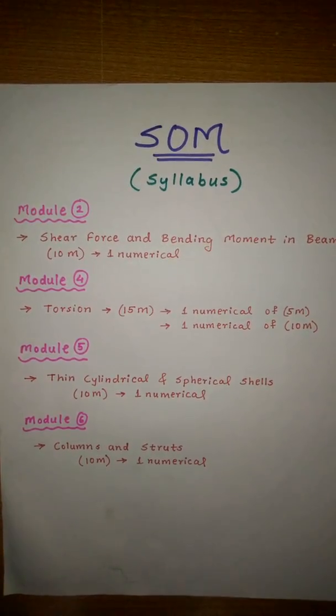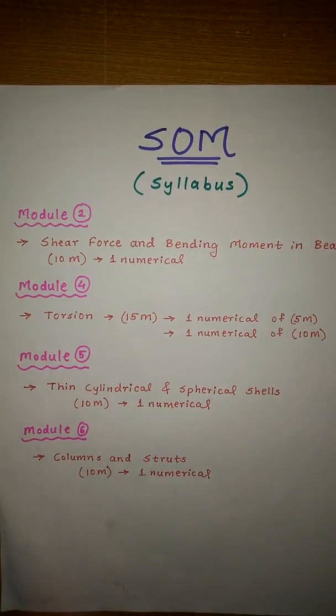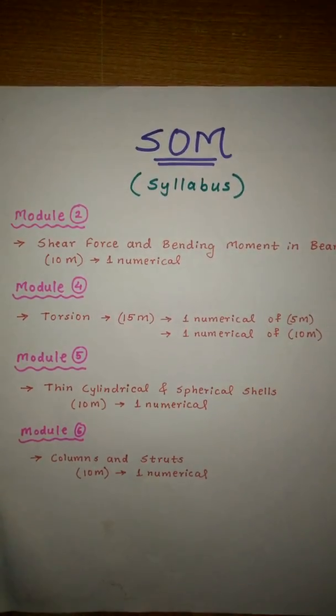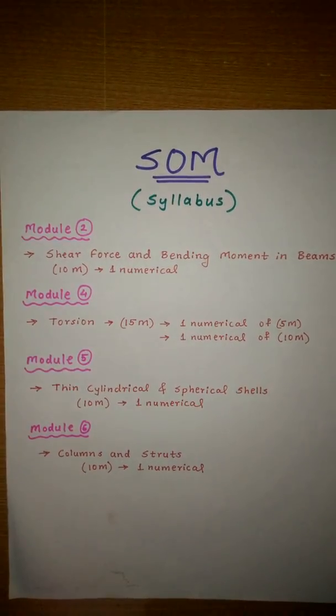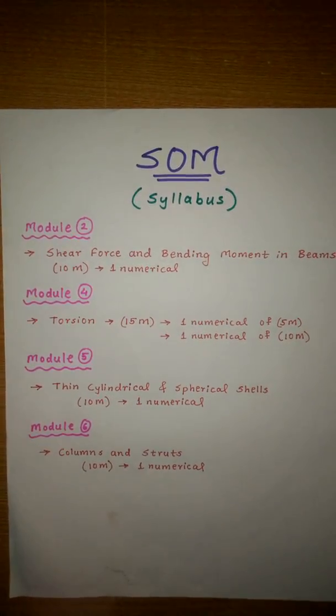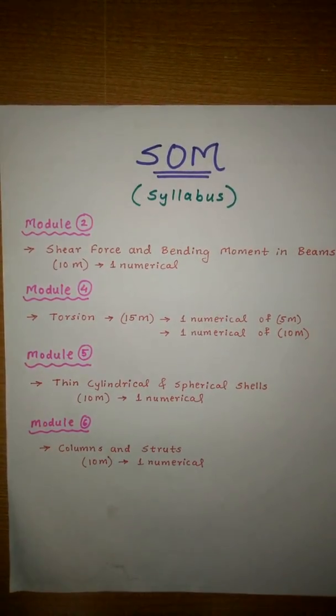And our next module is Module 6. Module 6 contains the chapters columns and struts. This also goes the same - there are some formulas, you have to just go with the formulas, put in the values, and you will easily get 10 marks.